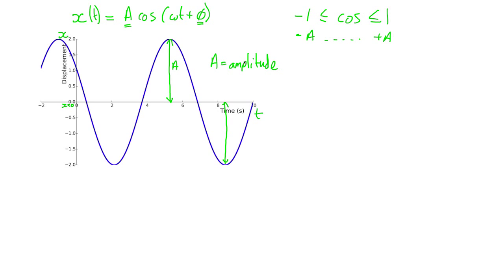Now let's have a look at φ. When t is equal to 0, this means that x is equal to A cosine φ. So as we decrease φ to 0, our displacement becomes equal to A. As we increase φ, our displacement decreases. The distance of the first peak relative to our time equals 0 axis is φ. As φ goes to 0, this distance goes to 0 and we get our maximum displacement at time t equals 0. As φ increases, it shifts the whole curve in the negative x direction. So φ is equal to the initial phase.